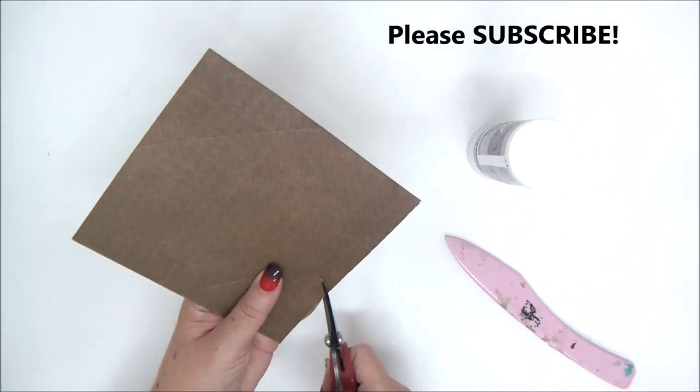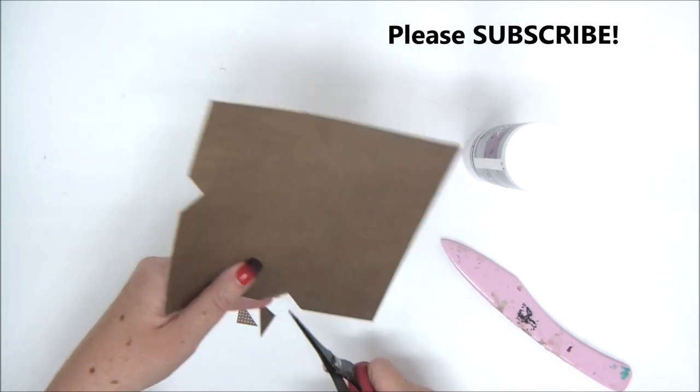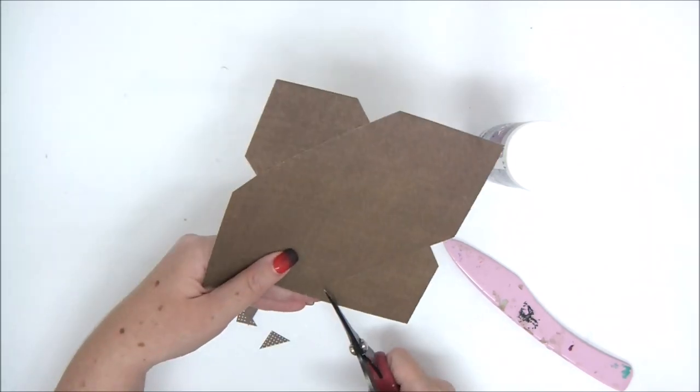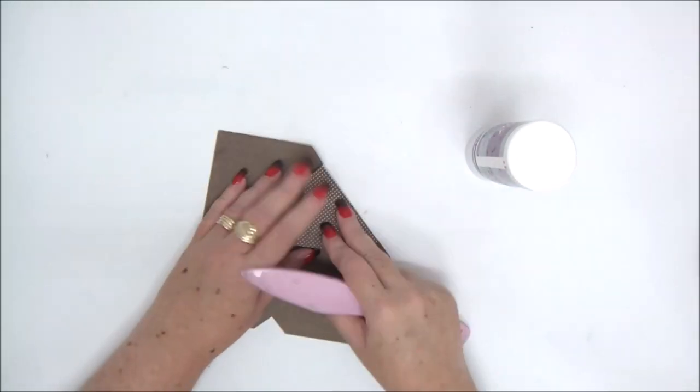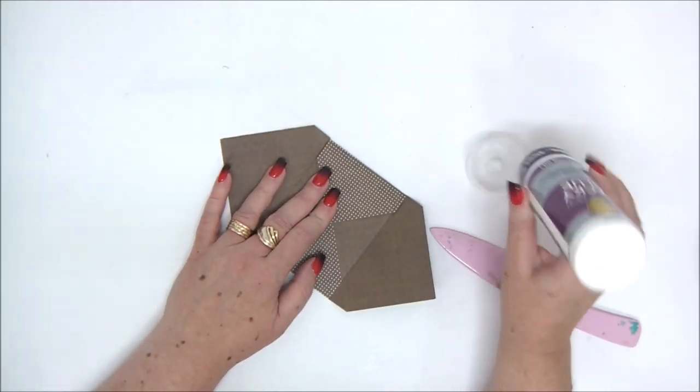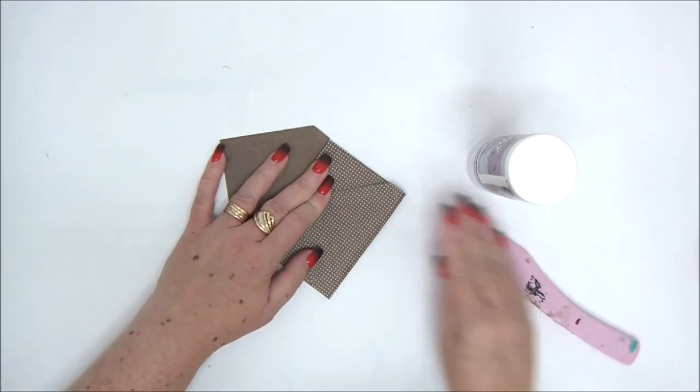So we're going to cut out all the four triangles from the corners. And then we're going to fold all the score lines. Then we're going to close the two smaller parts, apply glue and close the envelope.